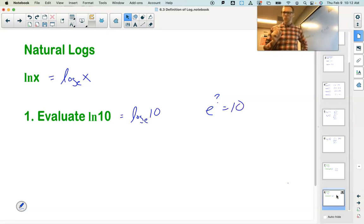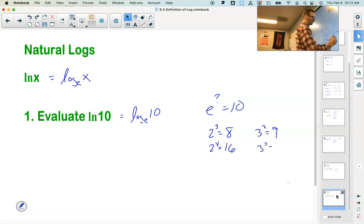Which means I need to say E to the what power is 10. Now, off the top of my header, I know that E is about 2.718. If it was 2, well, 2 cubed is 8. 2 to the 4th is 16.